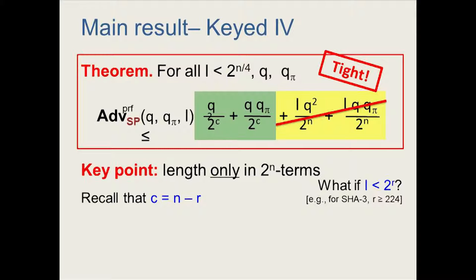Our main result is a new bound on the PRF security of sponges that is very close to what we want. The first two terms are exactly what we expect. There's an additional part that depends on length, but crucially, the length-dependent terms have denominator 2 to the N rather than 2 to the C. This is not too bad, because C equals N minus R, and in many concrete applications like SHA-3, R is large and L is safely assumed smaller than 2 to the R. In those cases, the final term vanishes and the bound is tight, matched by the attacks.